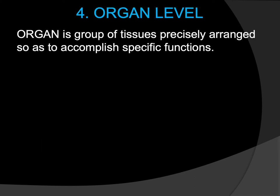The next level is the organ level. An organ is a group of tissues precisely arranged to accomplish specific functions. Examples include the thyroid gland, lungs, liver, intestines, bladder, kidney, stomach, heart, and brain, which will be further discussed as we cover the different systems of the body.